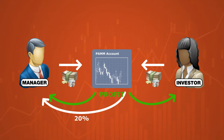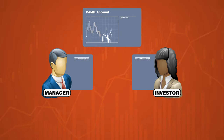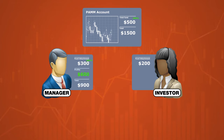Let's say 20%. Imagine that the manager has invested $300 of their own money and the investor $200. In total, there's $500 on the account. The manager's strategy results in a yield of 200% — that's $1,000 — bringing the total amount of funds to $1,500. This means 200% of the initial investment reaches $900 for the manager and $600 for the investor.